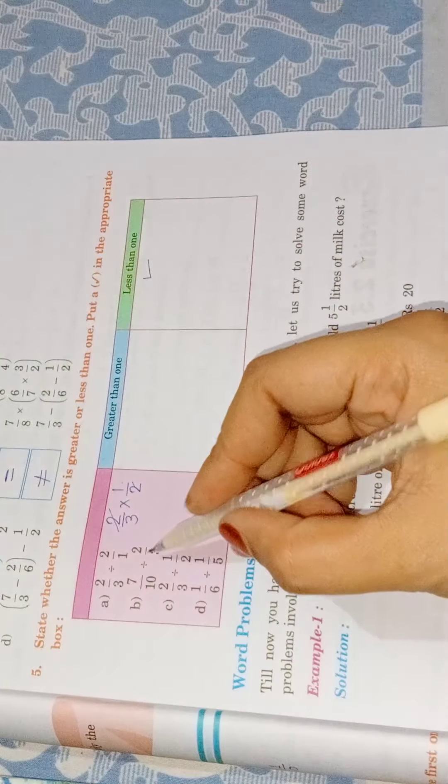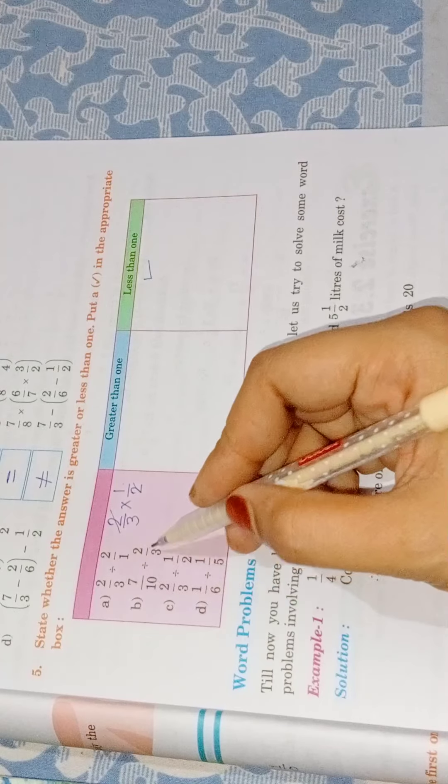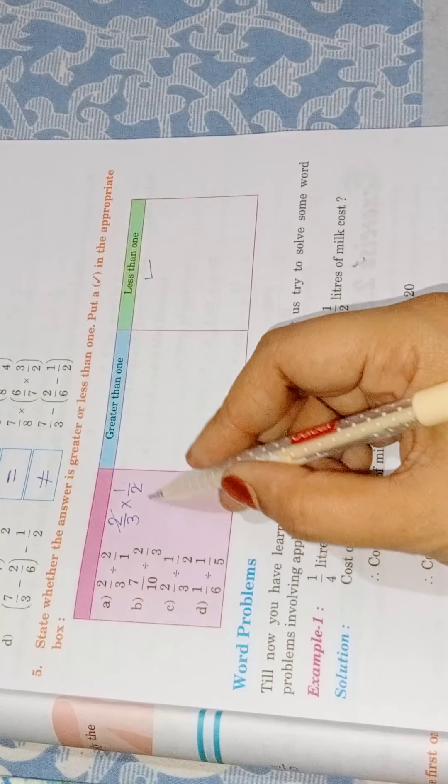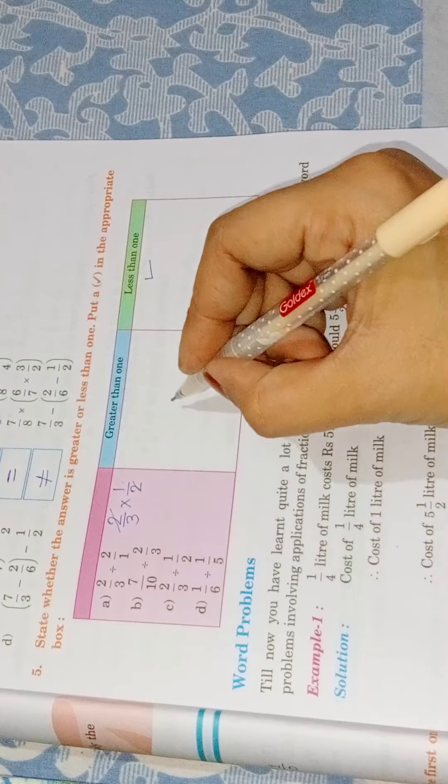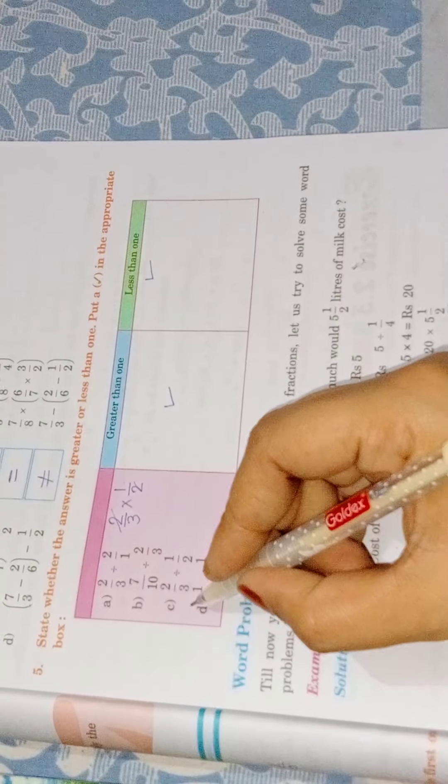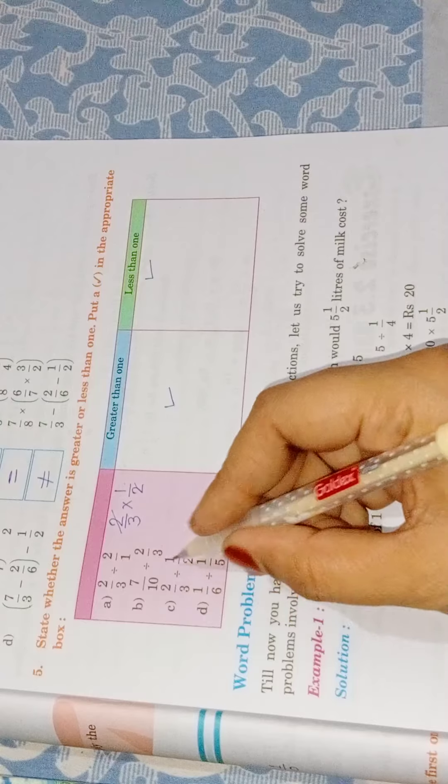In second question, when we solve the same process, if you change the divide by multiply by reciprocate and solve it, you will get greater than 1. Same in question C.